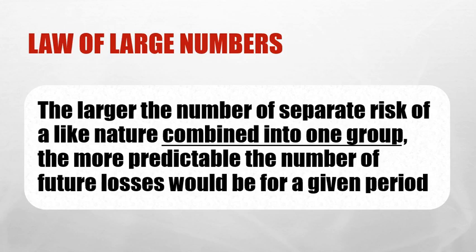The law of large numbers is a principle of probability in insurance. It's used to help forecast future losses and help insurance companies collect enough premium in the event of a loss. The basic principle is that the larger the number of separate risks of a like nature combined into one group, the more predictable the number of future losses would be for a given period.